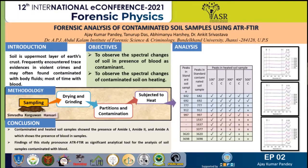The conclusion of the study was that contaminated and heated soil samples showed the presence of amide I, amide II, and amide A regions, which clearly indicates the presence of blood. The identification of blood will depend on the quantity of blood present in the soil and the time period, since microbial communities in the soil will degrade the blood over time. This study shows that ATR FTIR is a significant analytical tool for the analysis of soil samples contaminated with blood or any other biological fluid. Thank you.